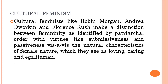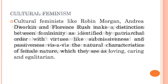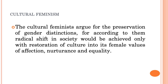Feminists like Robin Morgan, Andrea Dworkin and Florence Rush made a distinction between femininity as identified by the patriarchal order — with virtues like submissiveness and passiveness — versus the natural characteristics of female nature which could be loving, caring, nurturing and egalitarian. This feminism argues for the preservation of gender distinctions.